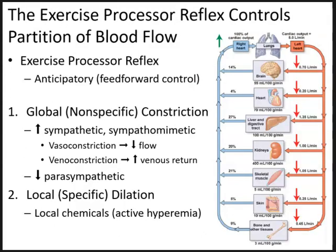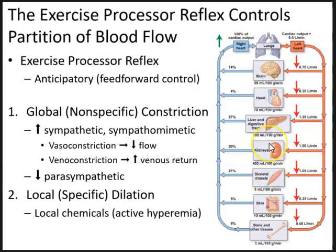This figure shows how blood is distributed to various organs when the body is at rest. Usually more than two-thirds of the cardiac output is routed to the digestive tract, the liver, skeletal muscles, and the kidneys. The exercise pressor reflex is one of those reflexes that helps control partition of blood flow.